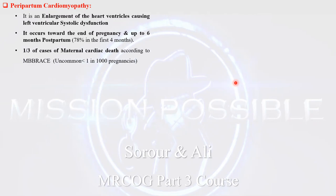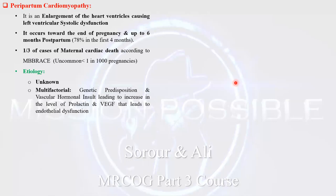Peripartum cardiomyopathy accounts for one third of causes of maternal cardiac death. The incidence is uncommon, occurring in less than one in a thousand pregnancies. The etiology is mostly unknown, but there are multifactorial factors including genetic predisposition and vascular hormonal insult. This vascular hormonal insult leads to increased prolactin levels — that is why bromocriptine is one management option — and also increased vascular endothelial growth factor, leading to endothelial dysfunction and dilatation of the heart ventricles.